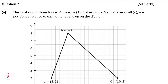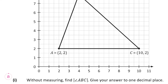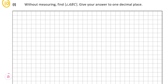Question 7, part A tells us that the locations of three towns — Abbeville, Blakestown and Cravenswell — are positioned relative to each other as shown on the diagram. This part is worth 10 marks and wants us to find the angle ABC without measuring. To do that, we're going to need to find the slope of BA and BC. We need to find the slope of line AB, and the slope is equal to Y2 minus Y1 over X2 minus X1, and this is on page 18 of your formula and tables book.